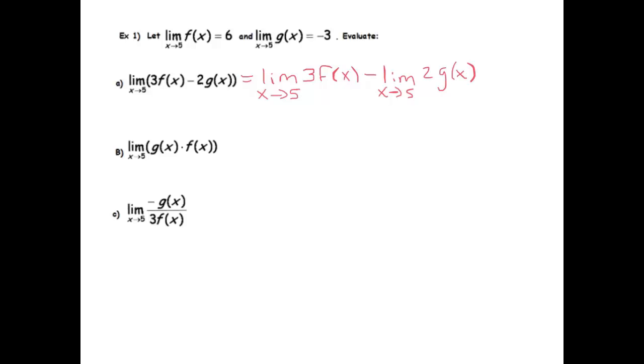And now the next property we can use is that 3 can move to the front. That 2 can move to the front. So that I get 3 times the limit as x goes to 5 of f(x) minus 2 times the limit as x goes to 5 of g(x).